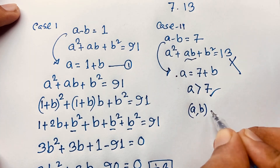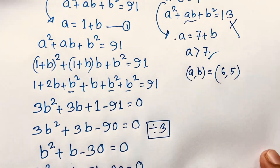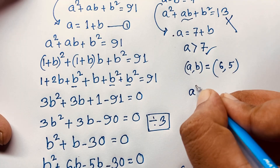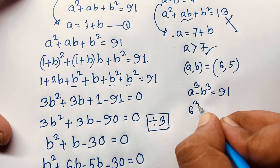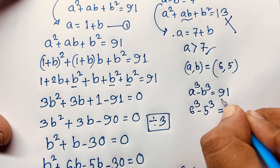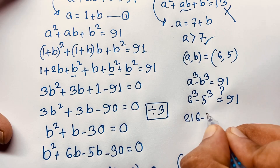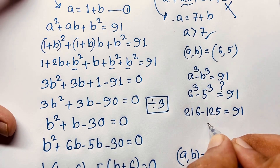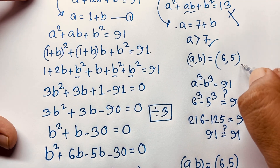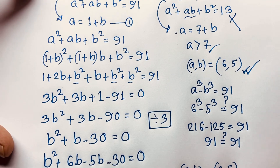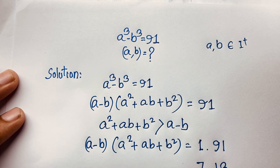Our final answer is (a, b) equals (6, 5). Let's verify: 6³ minus 5³ equals 216 minus 125 equals 91. This confirms our answer. Thank you all — if you enjoyed this video please subscribe to our channel for more interesting videos. Goodbye, take care!